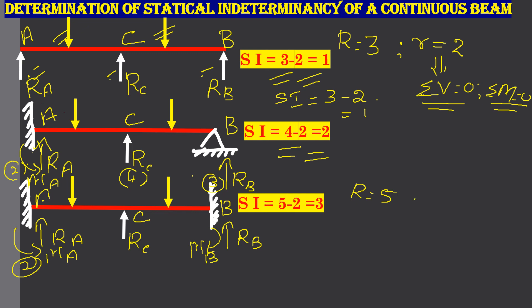So, it is 5 and the number of equilibrium equations available is 2. So, it is 5 minus 2, it is 3. We will see one more example.